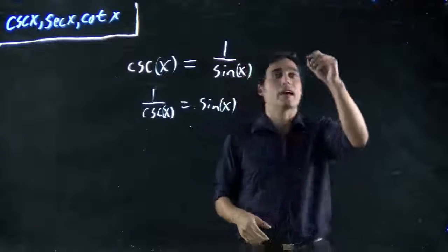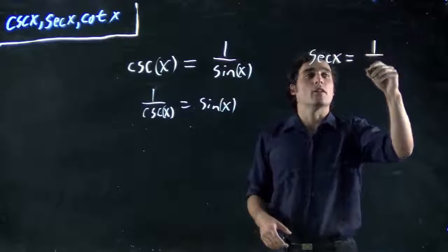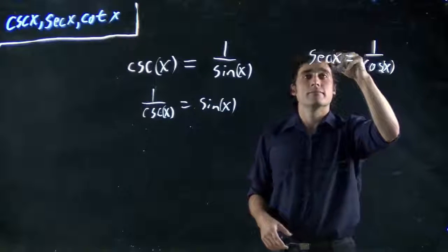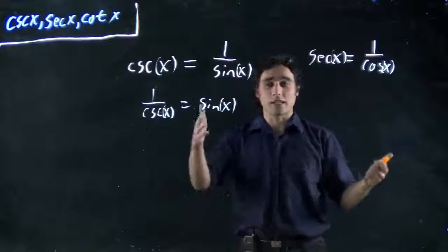Secant x is the same as 1 over cosine x. Which means 1 over secant x is equal to cosine x, just like this.